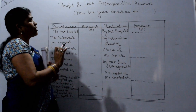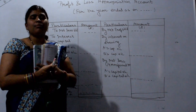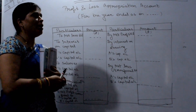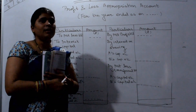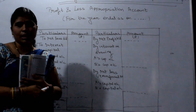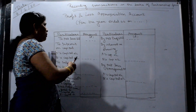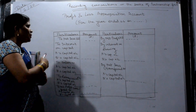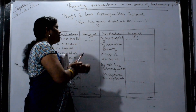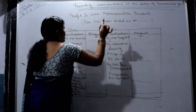Recording of transactions in the books of a partnership firm is a very important topic. The Profit and Loss Appropriation Account is a format. If we have a profit, it appears on the credit side. This is our debit side and this is our credit side.